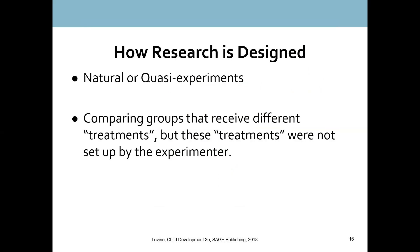I've mentioned the term 'true experiment' a couple of times. You have to have random assignment in order for it to be considered a true experiment. We also have what's called natural or quasi-experiments — these are not true experiments and you have to be very cautious in interpreting their results. Because if there was no random assignment used, there are no easy, straightforward conclusions that you can trust.